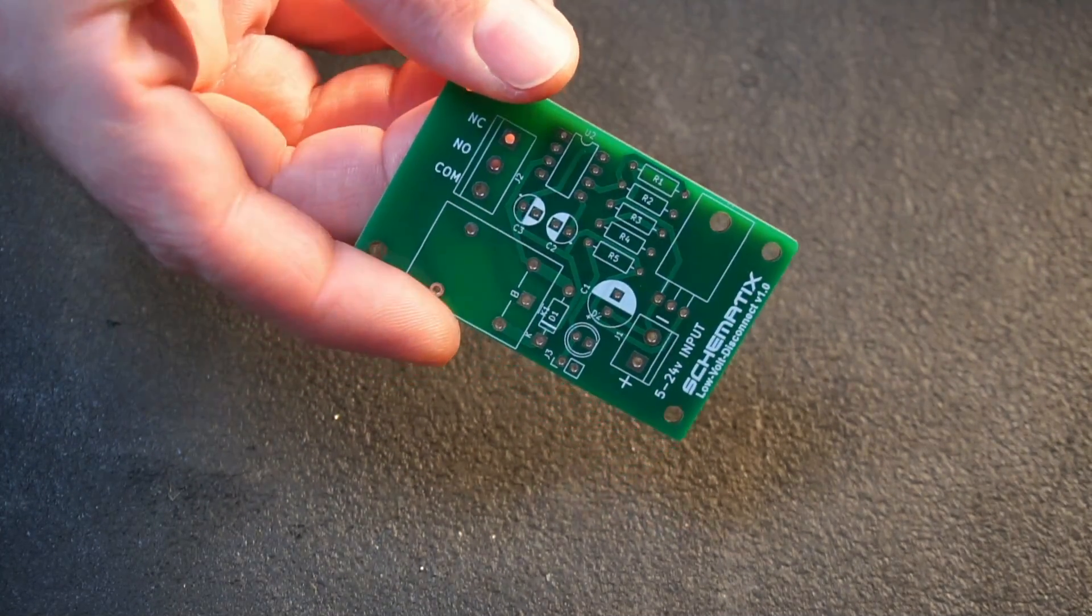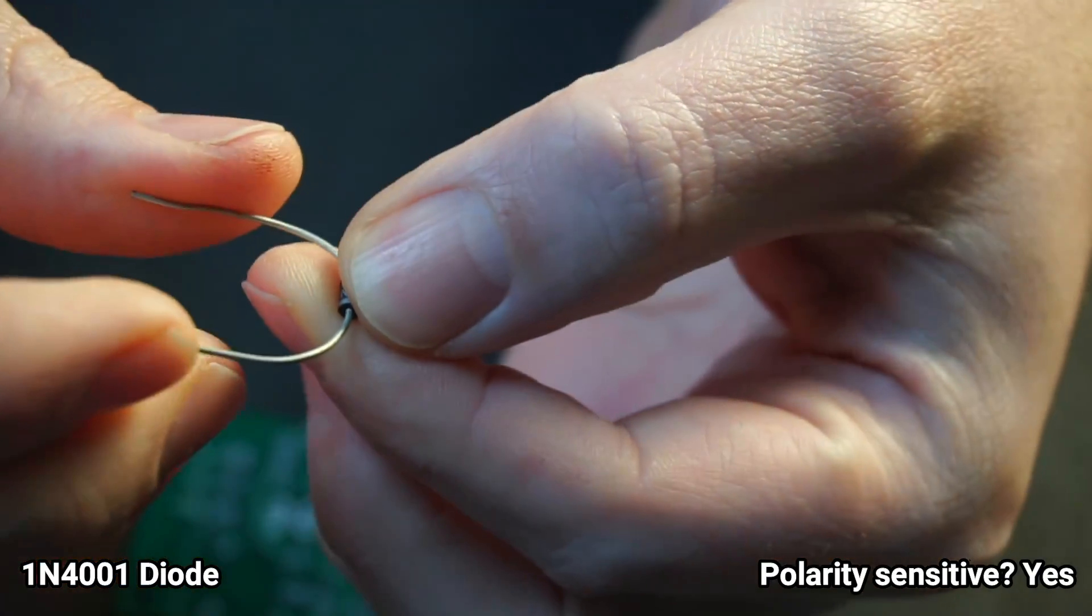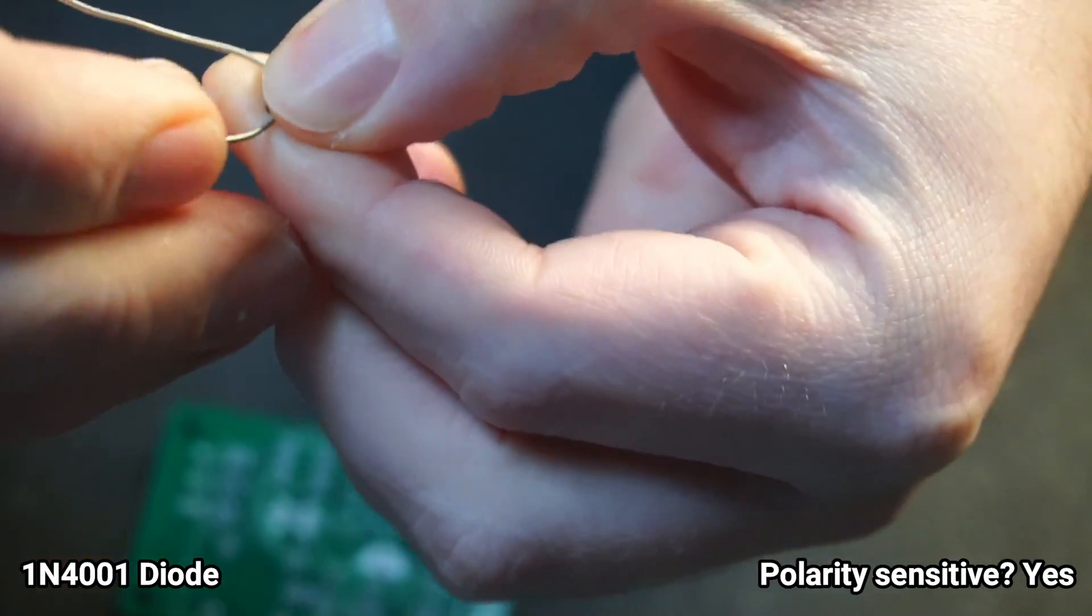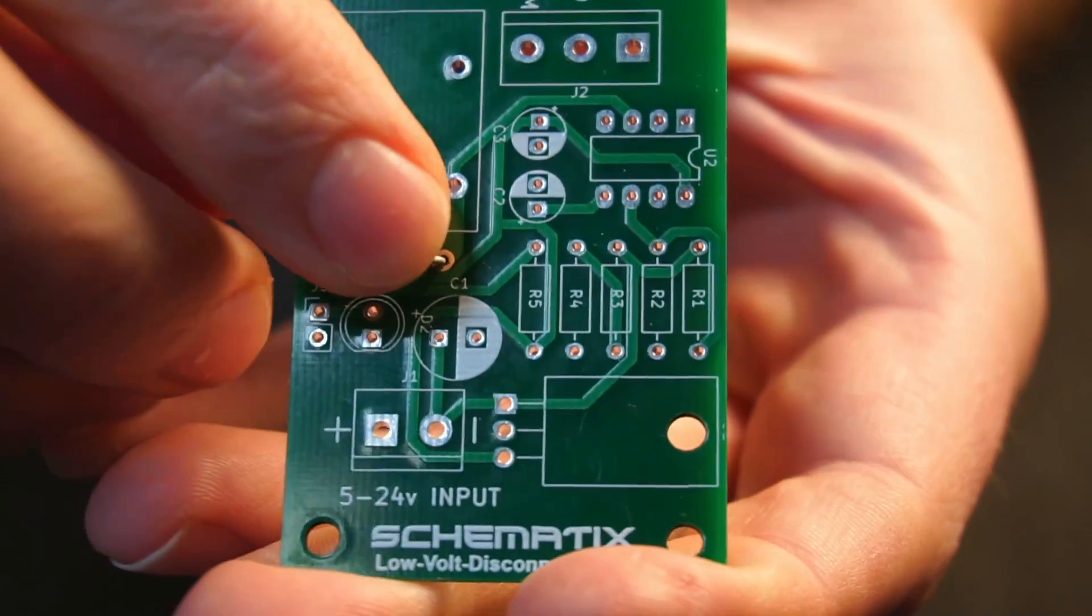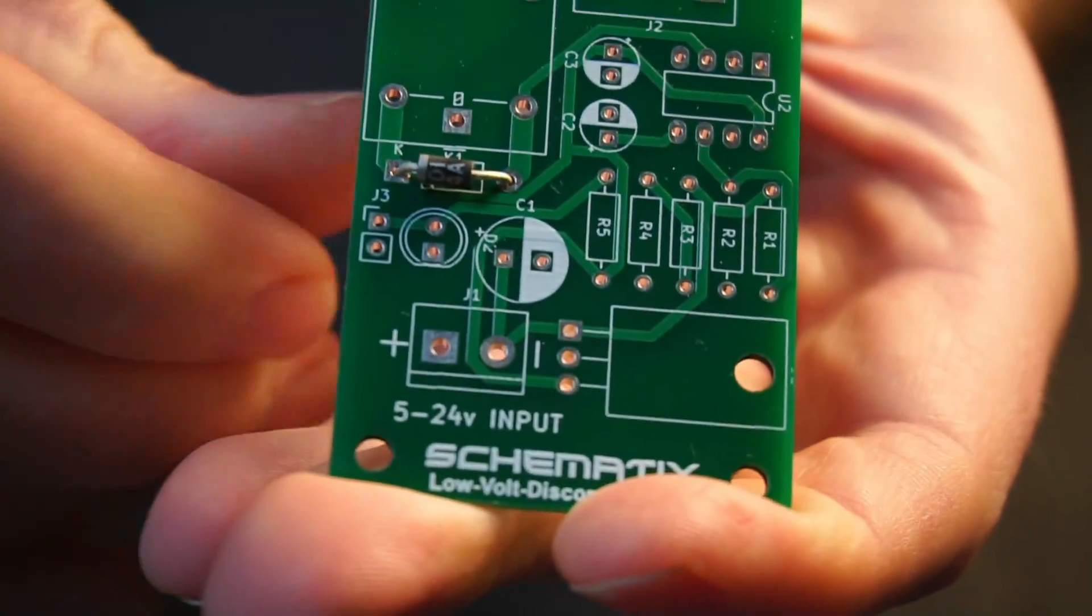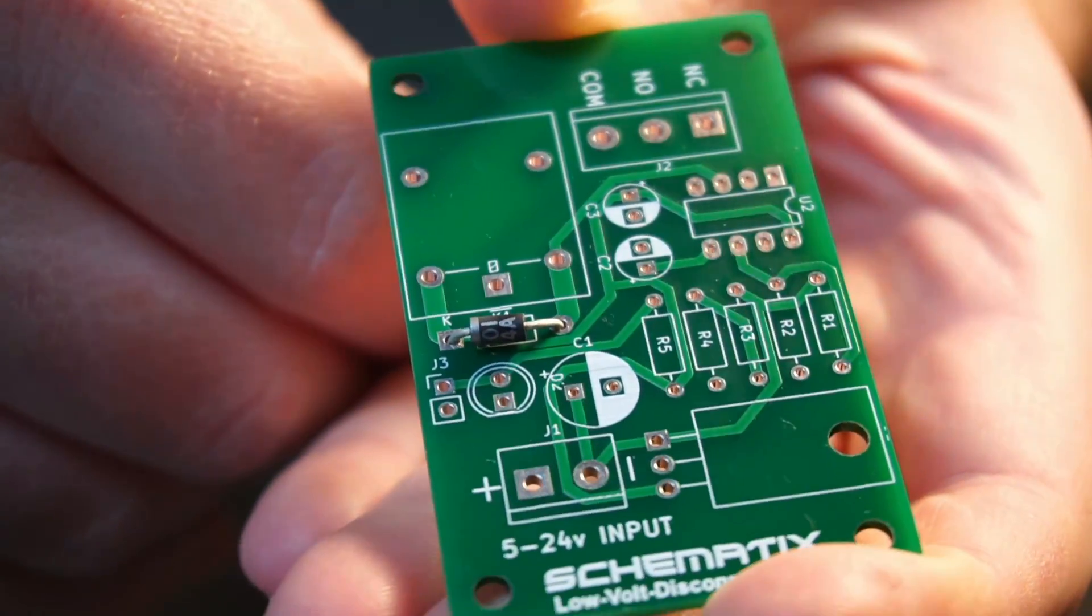This project can be easily assembled on a vero board, but I've made a custom PCB just for this project. If you're interested in ordering your own PCBs you can find the gerber files using the link in the video's description. If you're new to the world of assembling circuits, start off by installing the smallest components first.